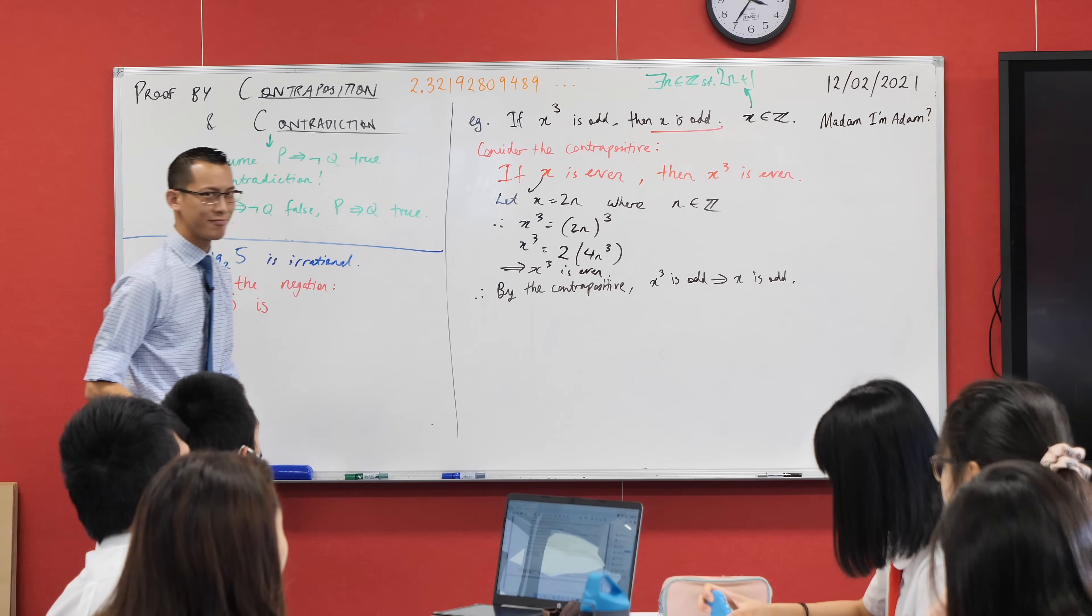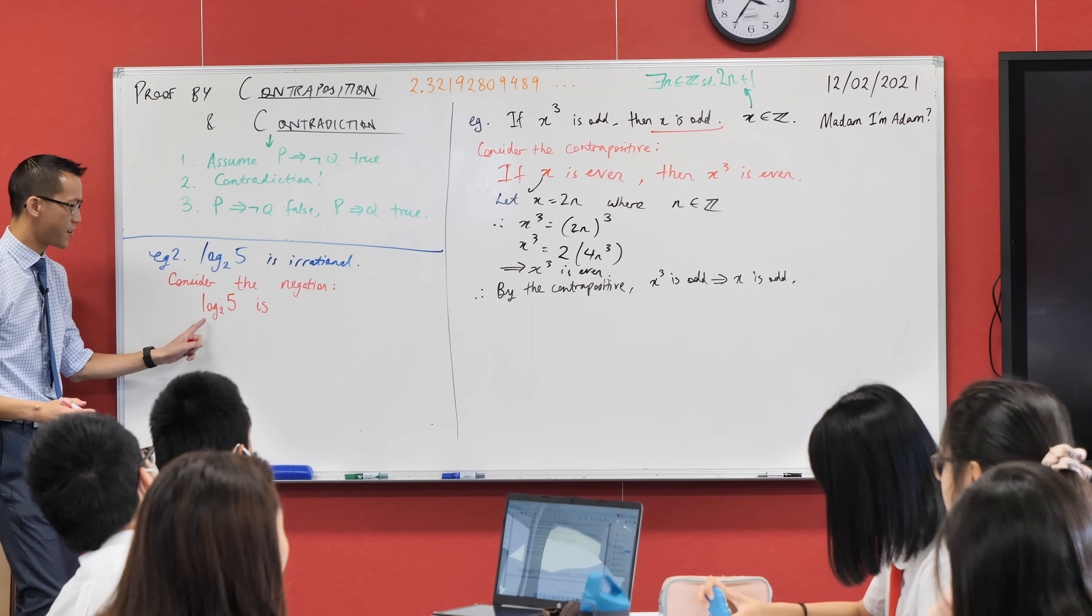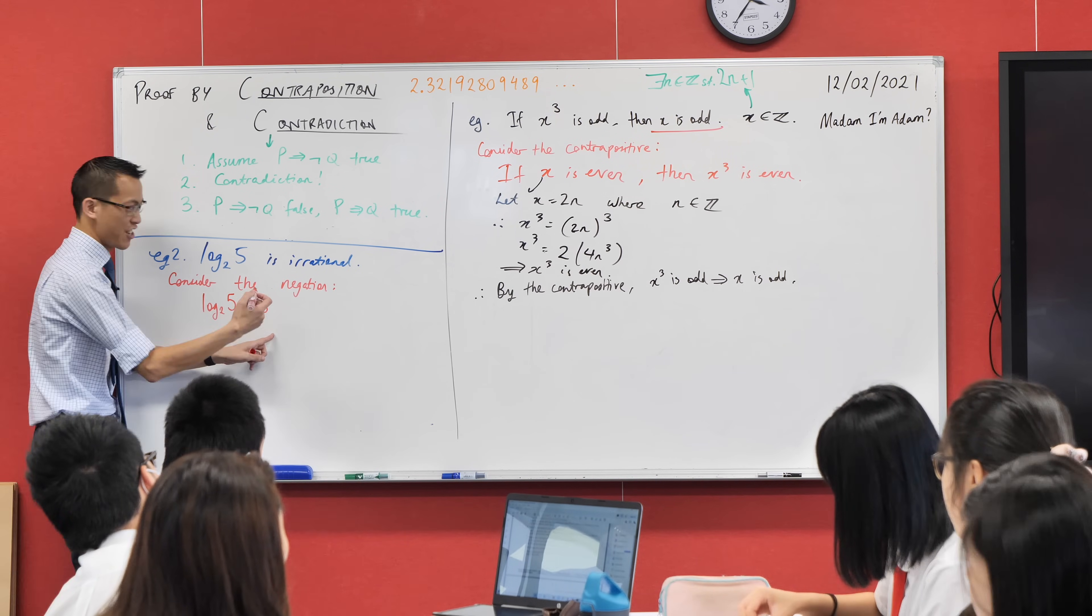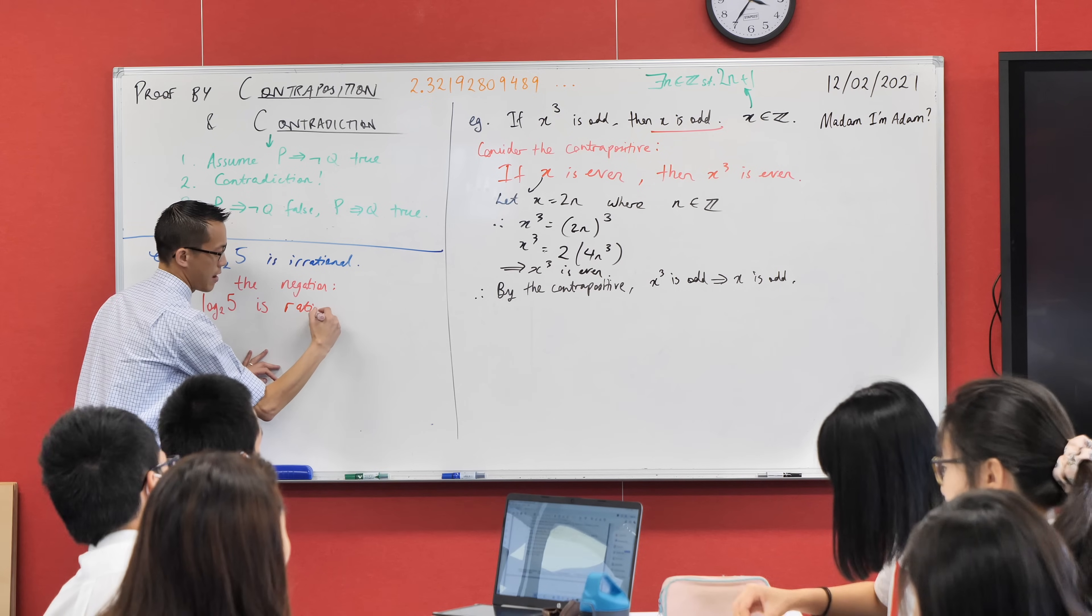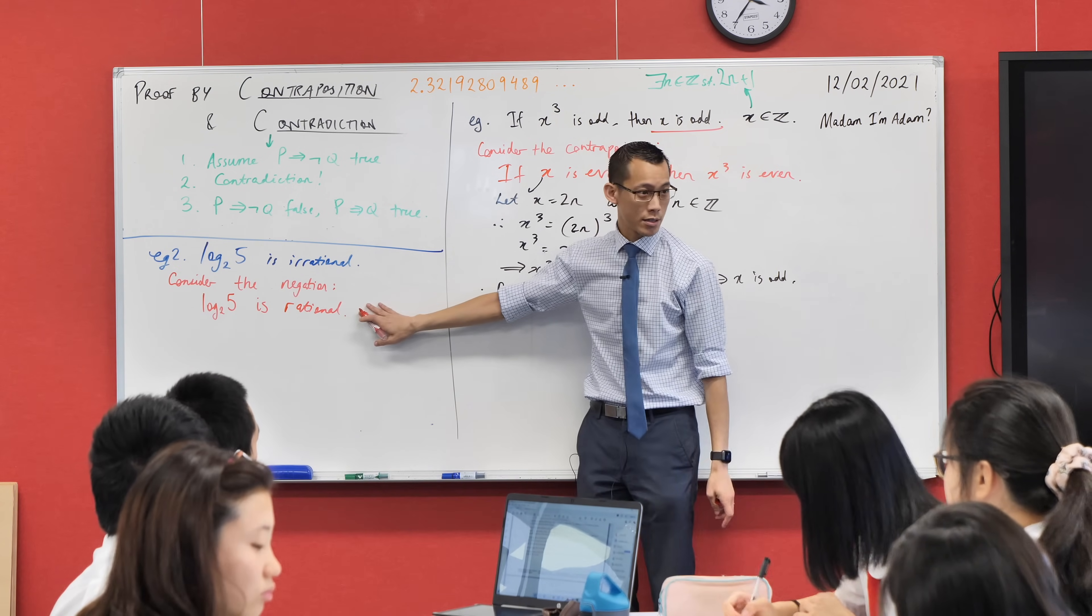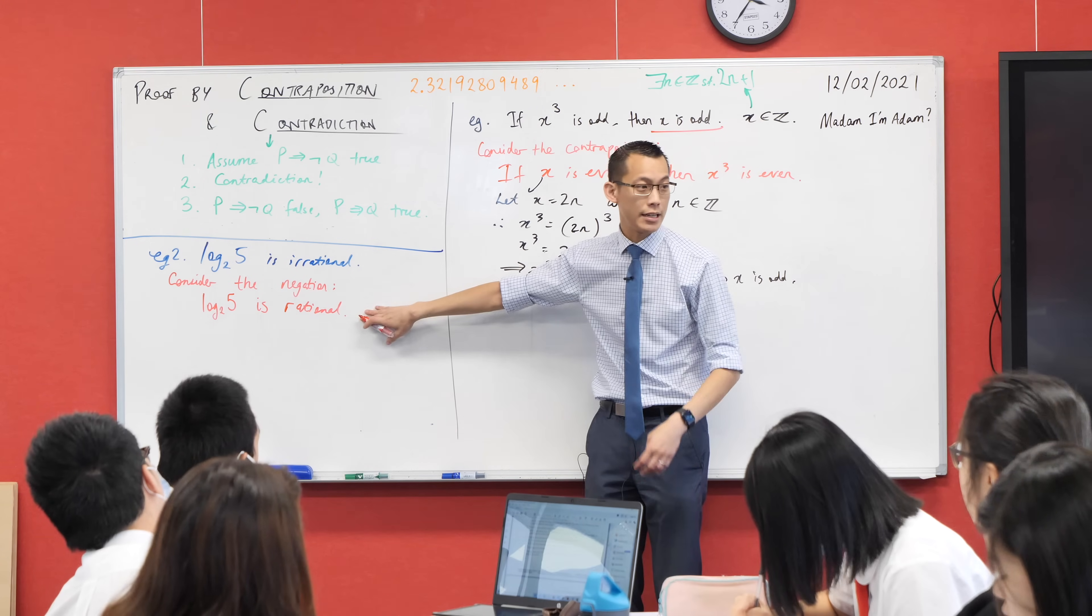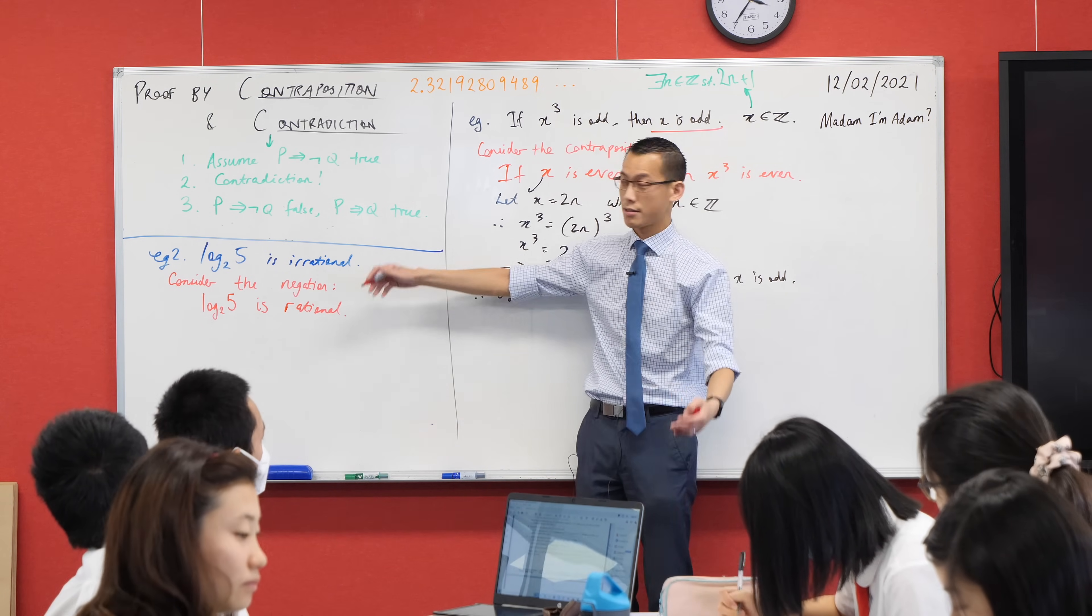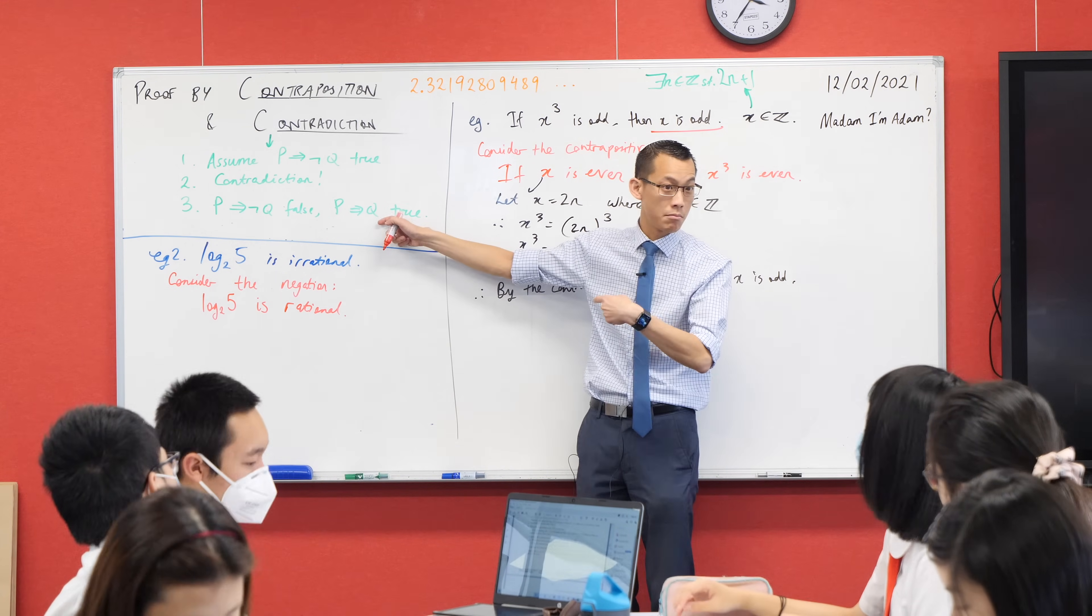Most of you have gotten this far. Log base 2 of 5 is, to be the negation? Rational. That's the opposite, right? If it's not irrational, it's rational. So if I start from this, what I want to try and do is go from here to something that I know is not true. And then that means that the original thing must be true.